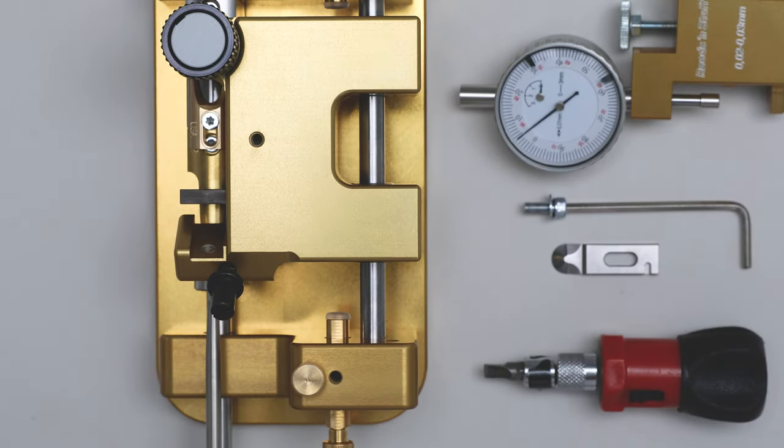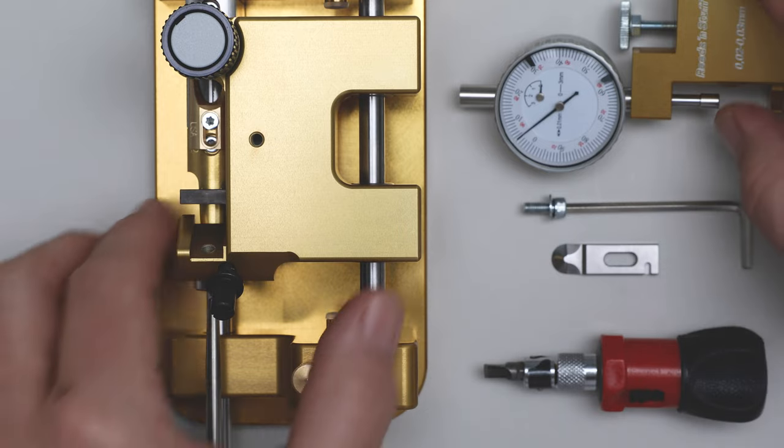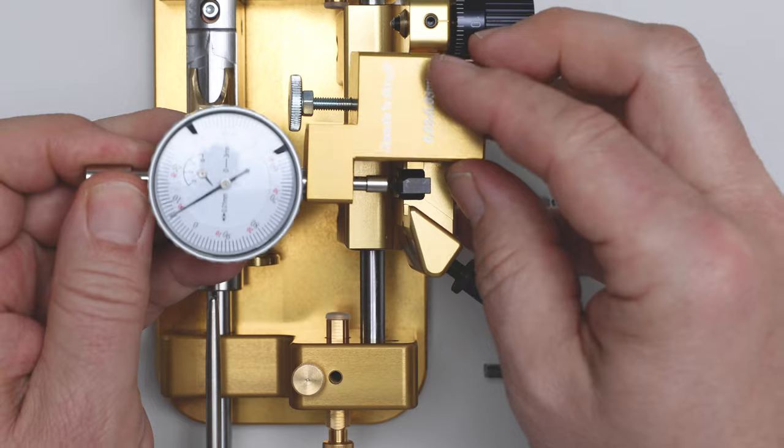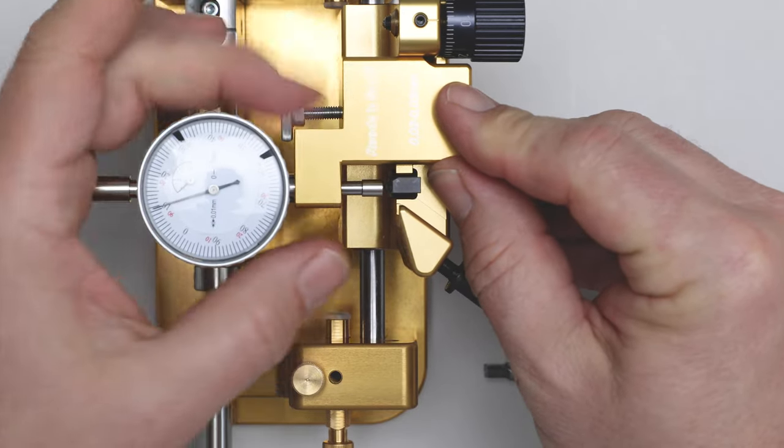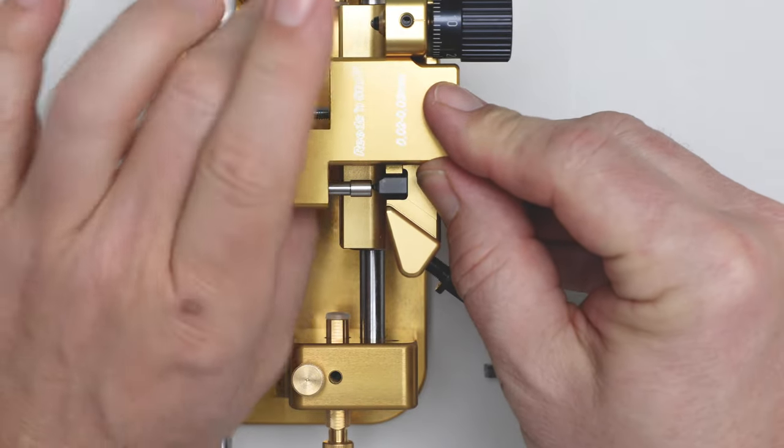Today we will learn how to use the blade adjustment indicator. The old blade is already out, the handle is taken off, and we fix the blade dial indicator on the carriage by locking this screw.